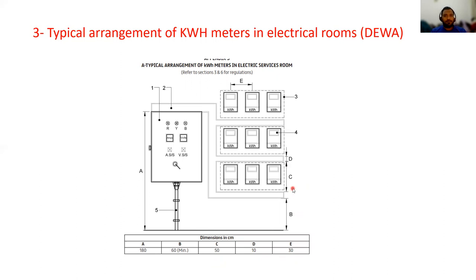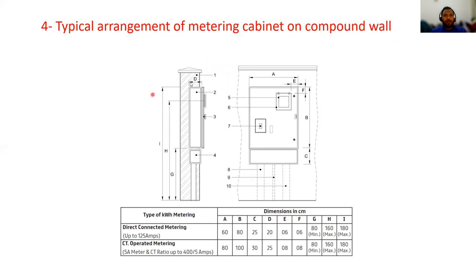Question four: typical arrangement of metering cabinet on a compound wall — how to install kilowatt-hour meters. Just go through this slide to learn the details. The distance from the finished floor level, labeled 'H', up to the kilowatt-hour meter is equal to 1600 mm. This is how you set out the dimensions for the kilowatt-hour meters.